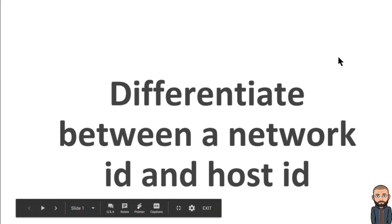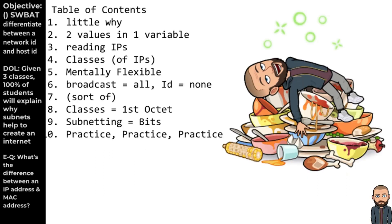The objective today is to differentiate between a network ID and host ID. For our table of contents, I'm going to first talk about why we're subnetting. This will give you insight into why we have two values in one variable — one part of that number is a network ID and the other part is a host ID. We'll learn how to read IPs and differentiate between network and host.